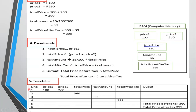To check if your answer is correct, we trace. Line one: input price one = 100, price two = 260, using our specific example. Line two: total price — add 100 and 260 to get 360. Line three: tax amount equals 15% times total price, calculate and record the answer. Line four: total price after tax — take total price 360, add tax amount 39. Line five: two outputs — the total price before tax and total price after tax, with messages and their respective values.